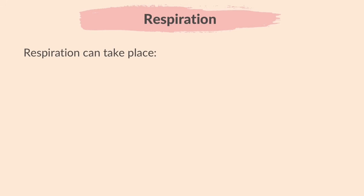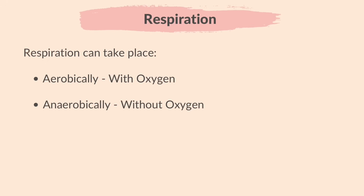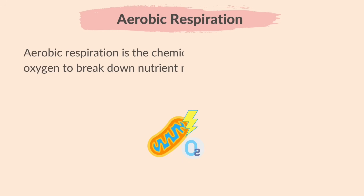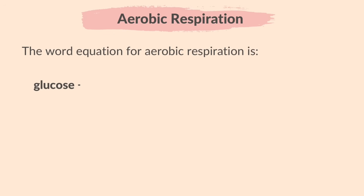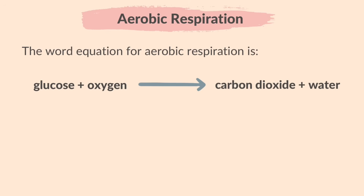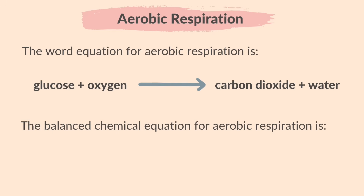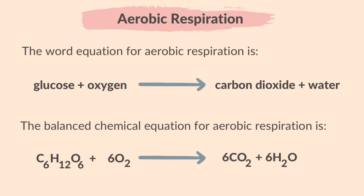Respiration can take place aerobically, that is with oxygen, or anaerobically, that is without oxygen. Aerobic respiration is the chemical reactions in cells that use oxygen to break down nutrient molecules to release energy. The word equation for aerobic respiration is: glucose and oxygen give carbon dioxide and water. Energy is also released in this reaction. The balanced chemical equation is: C6H12O6 + 6O2 → 6CO2 + 6H2O.